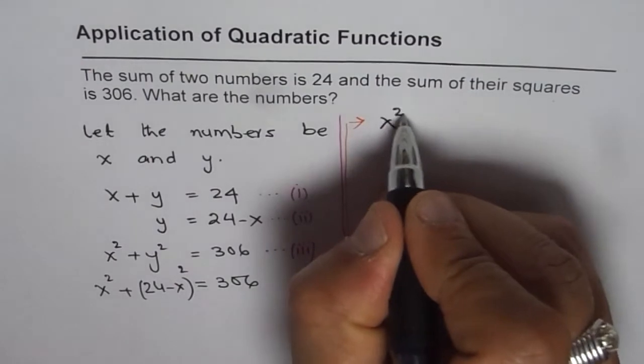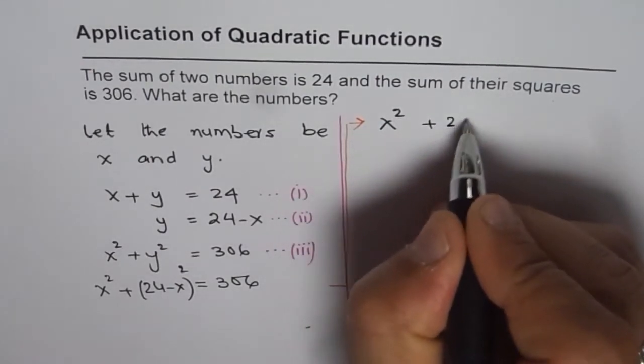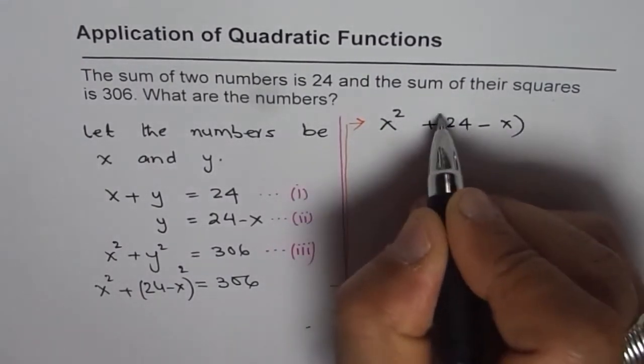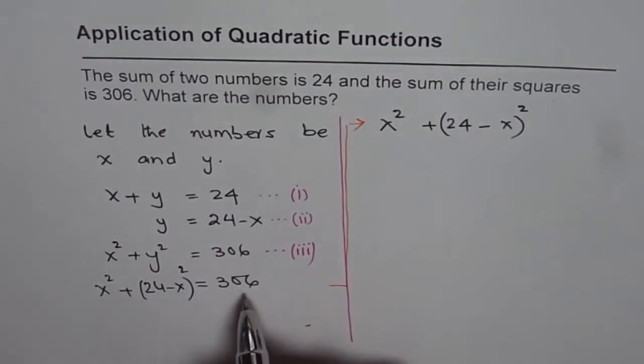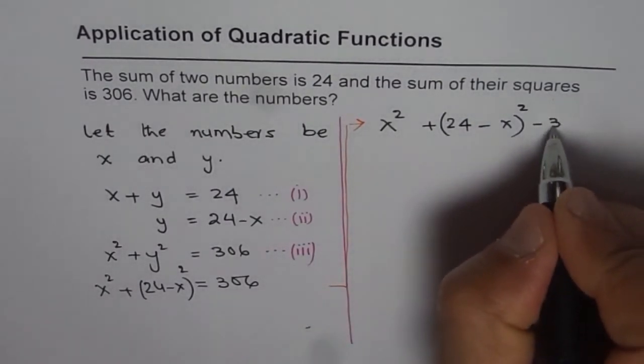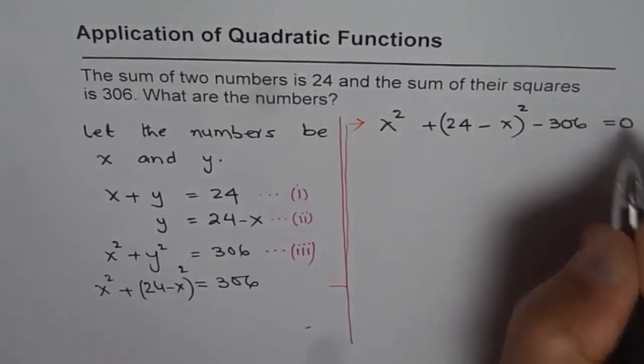Let me rewrite this. So we have this equation as x squared plus (24 minus x) squared equals 306. Let me bring it to the left side, so minus 306 equals 0.